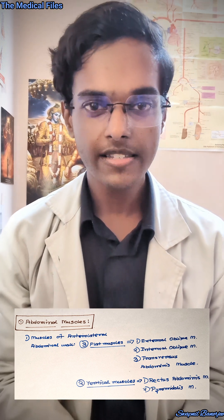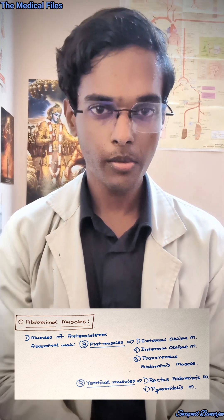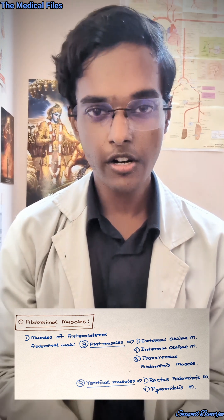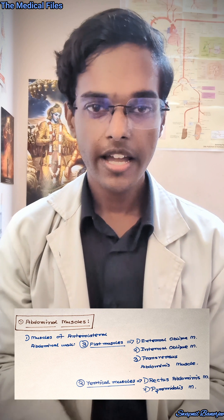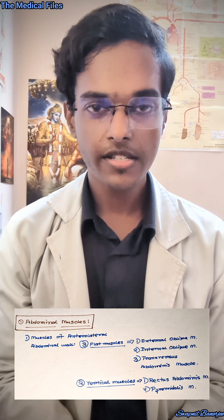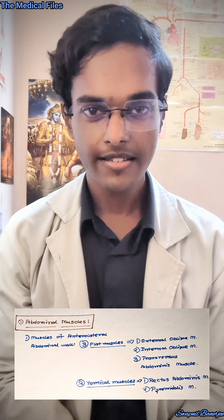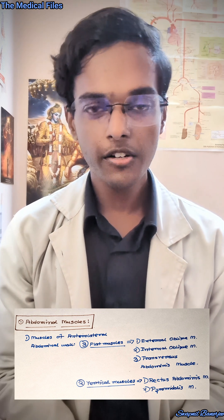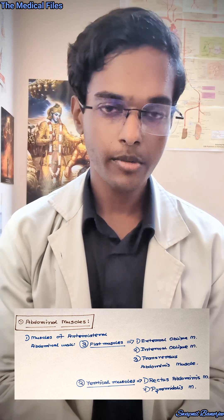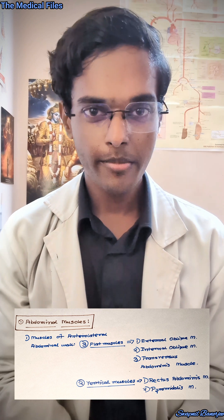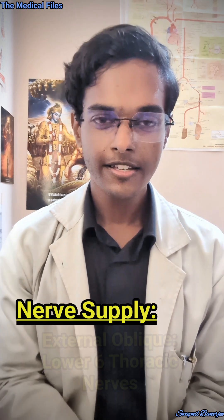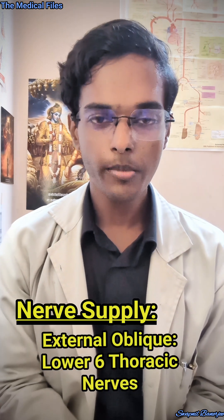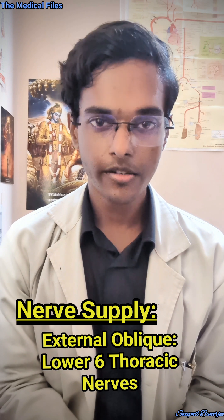The three flat muscles are external oblique, internal oblique, and the transversus abdominis, and the vertical group of muscles are rectus abdominis and pyramidalis. Now I shall begin with the nerve supply of these abdominal muscles.